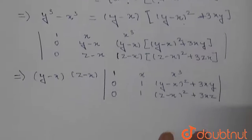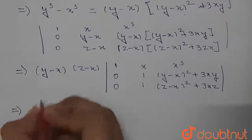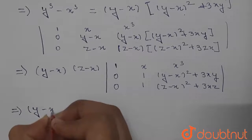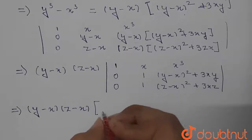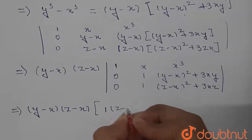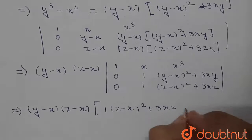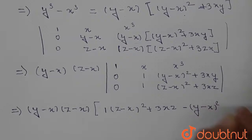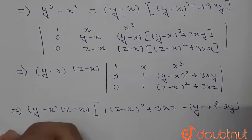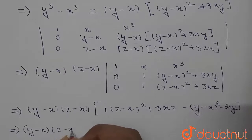Now we expand along column 1. So when expanding we get (y minus x)(z minus x) times [1 times ((z minus x)² plus 3xz) minus ((y minus x)² plus 3xy)].